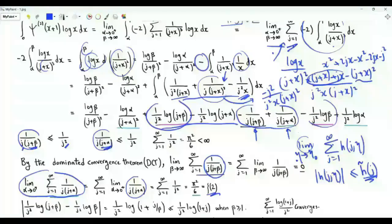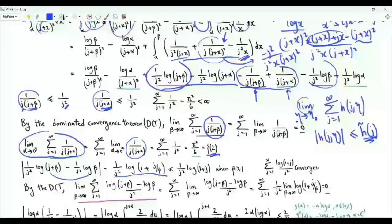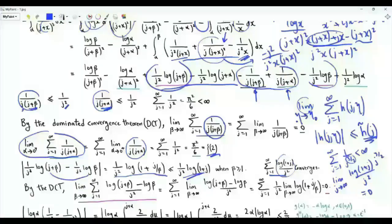Let's turn our focus to the term 1 over j squared times [log(j+beta) minus log beta], which we can combine as log(1 + j/beta). Since j and beta are positive, this quantity is positive. Taking the limit as beta tends to infinity, we can assume beta is greater than or equal to 1, so j/beta is at most j, and log(1+j/beta) is upper bounded by log(1+j). This upper bound does not depend on beta. Using the limit comparison test with the sum of 1 over j to the 3/2, which converges since 3/2 > 1, we get that the limit as j tends to infinity of log(1+j) over j squared divided by 1 over j^(3/2) equals 0. So we can apply dominated convergence, and the limit is 0.